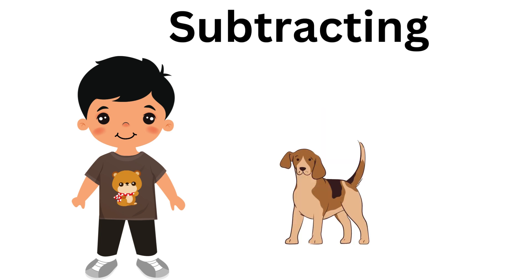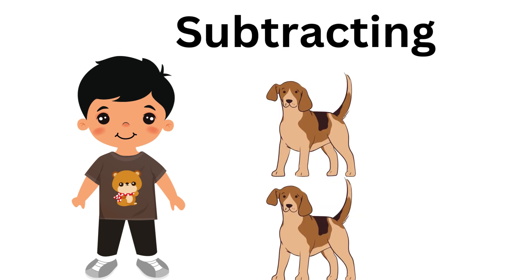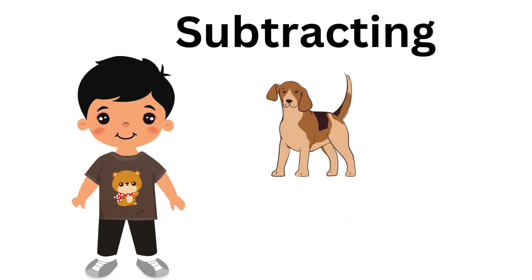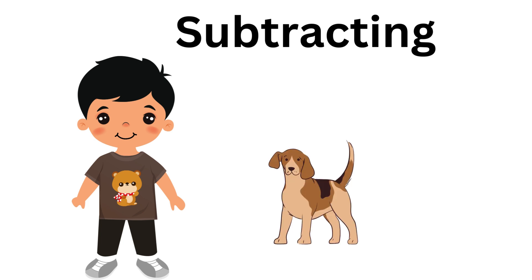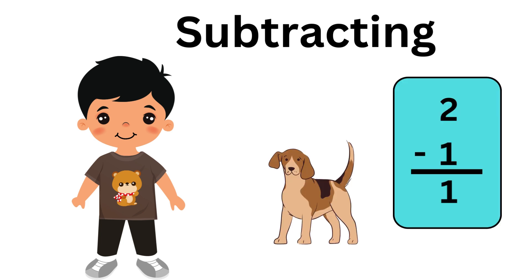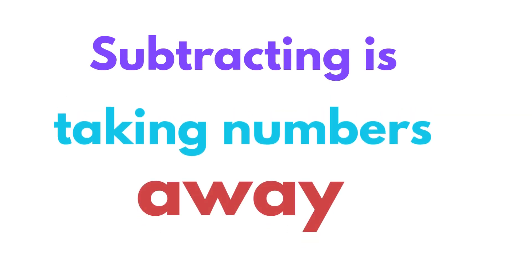Yeah, he only has one dog left. He had two dogs, and he subtracted one dog. Took one dog away, and he just has one. So two minus one equals one. Subtracting then is taking numbers away.